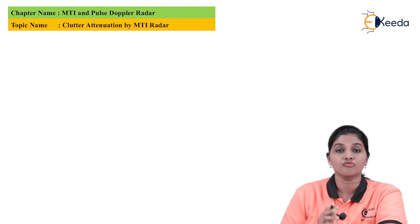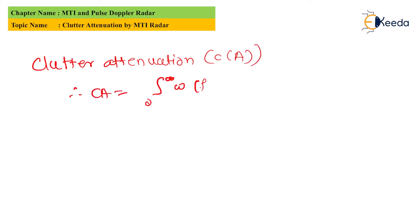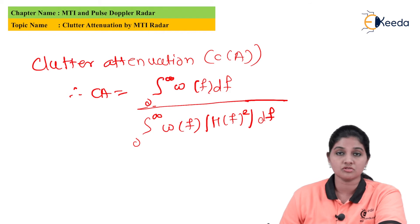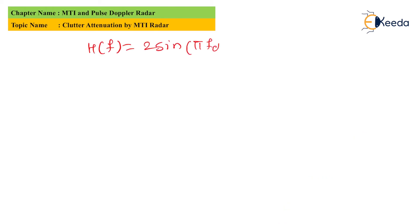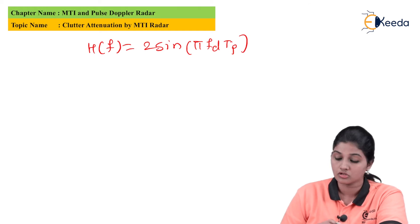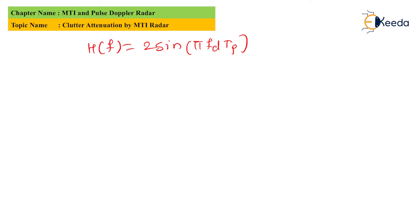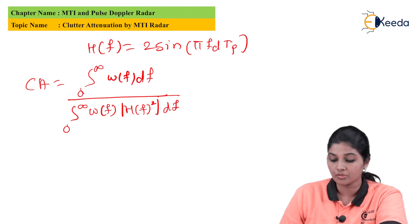The same equation can be used for obtaining the value of clutter attenuation. Where H(f) is the frequency response of the single delay liner, H(f) is equal to 2·sin(π·f_d·T_p), obtained from the response of the previous single delay liner. The clutter attenuation can be written as: CA equals integration from 0 to infinity of W(f)·df divided by integration from 0 to infinity of W(f)·|H(f)|²·df.